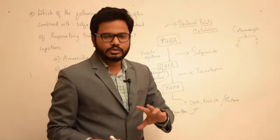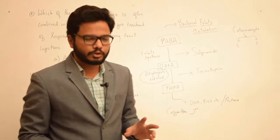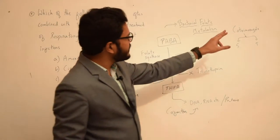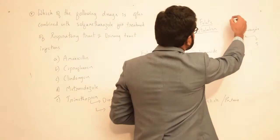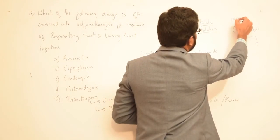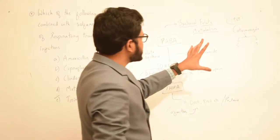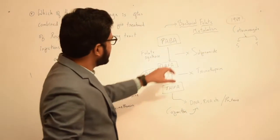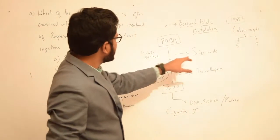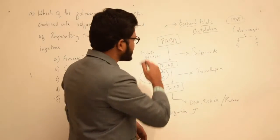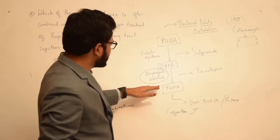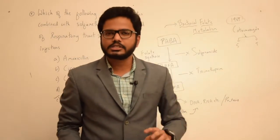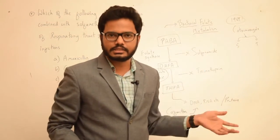This combination of sulfamethoxazole and trimethoprim was introduced way back in 1969. The advantage of this combination is that sulfonamides usually inhibit folate synthase enzyme, whereas trimethoprim inhibits the next sequence. So there is sequential blockade of folic acid synthesis.